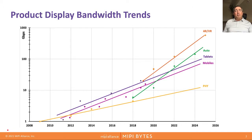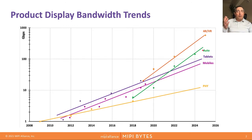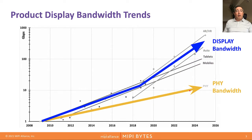First, let's take a look at display bandwidth usage for consumer electronic products. This logarithmic chart maps out the evolution of display bandwidth over time for various types of products that use display technology, such as mobile, tablet, automotive applications, and AR/VR. When you compare this to the evolution of PHY speed over the same period of time, what you can quickly observe is that PHY speed is increasing by approximately 20% per year, whereas display bandwidth has increased twice as fast at 40% per year, which created a clear gap between the two.